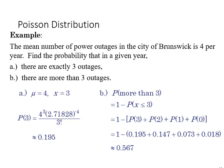Here's an example where we apply the Poisson distribution. The mean number of power outages in the city of Brunswick is four per year. We want to know the odds of finding: A, exactly three outages in a given year, or B, more than three outages. First we know mu is 4, X is 3.